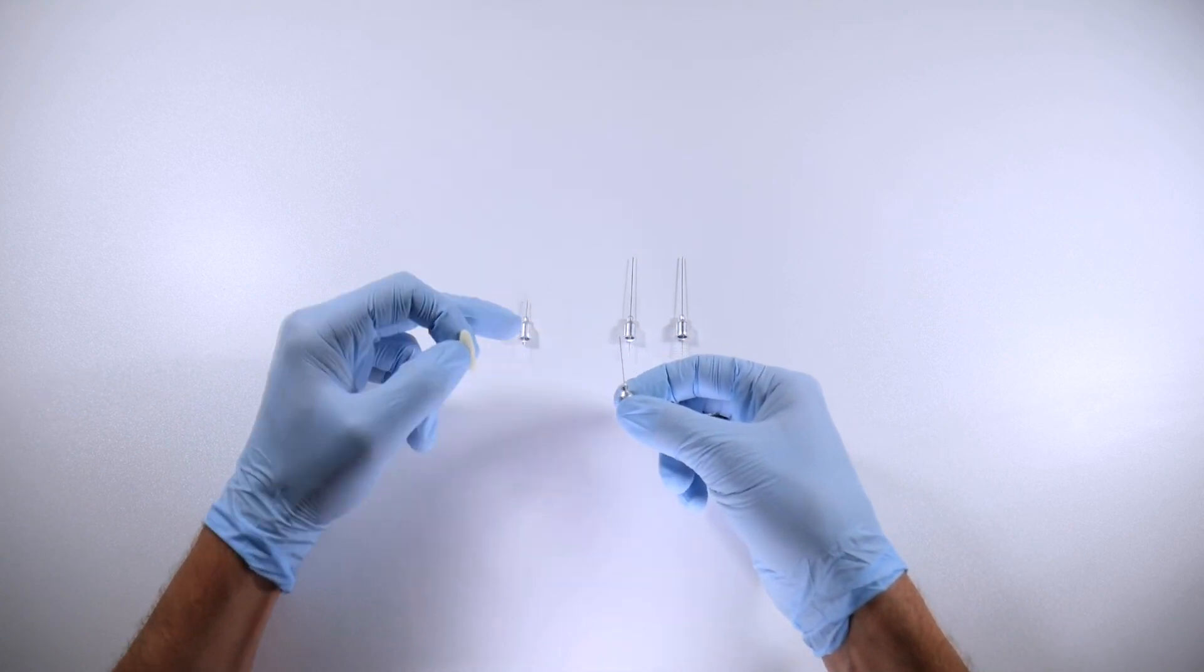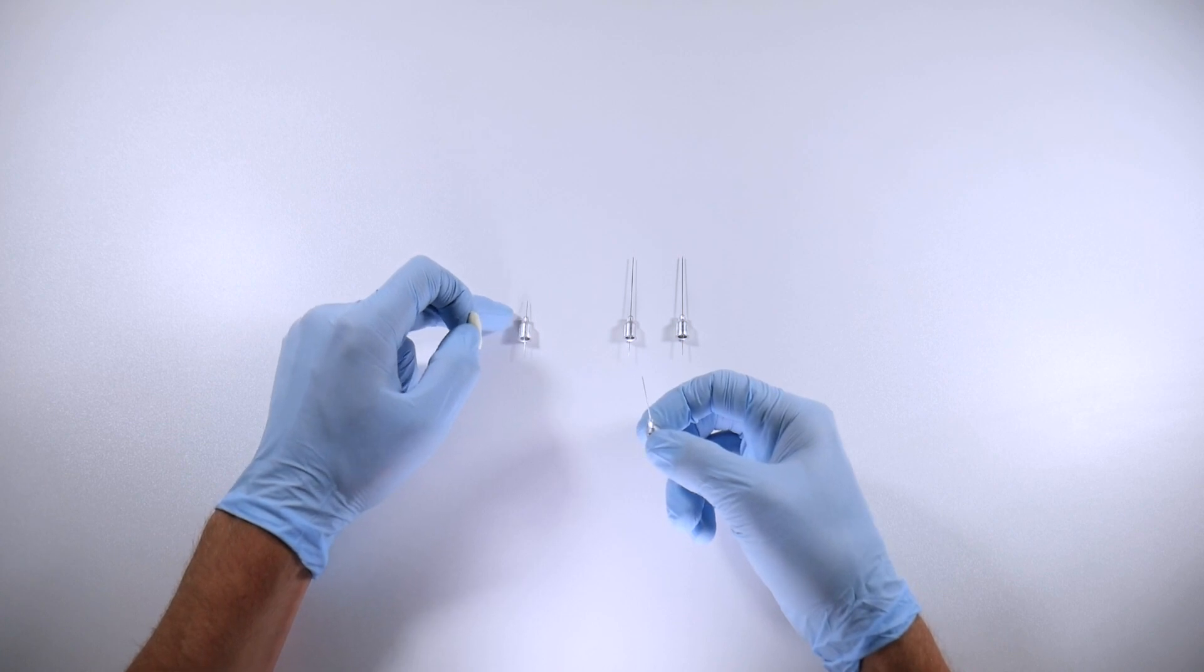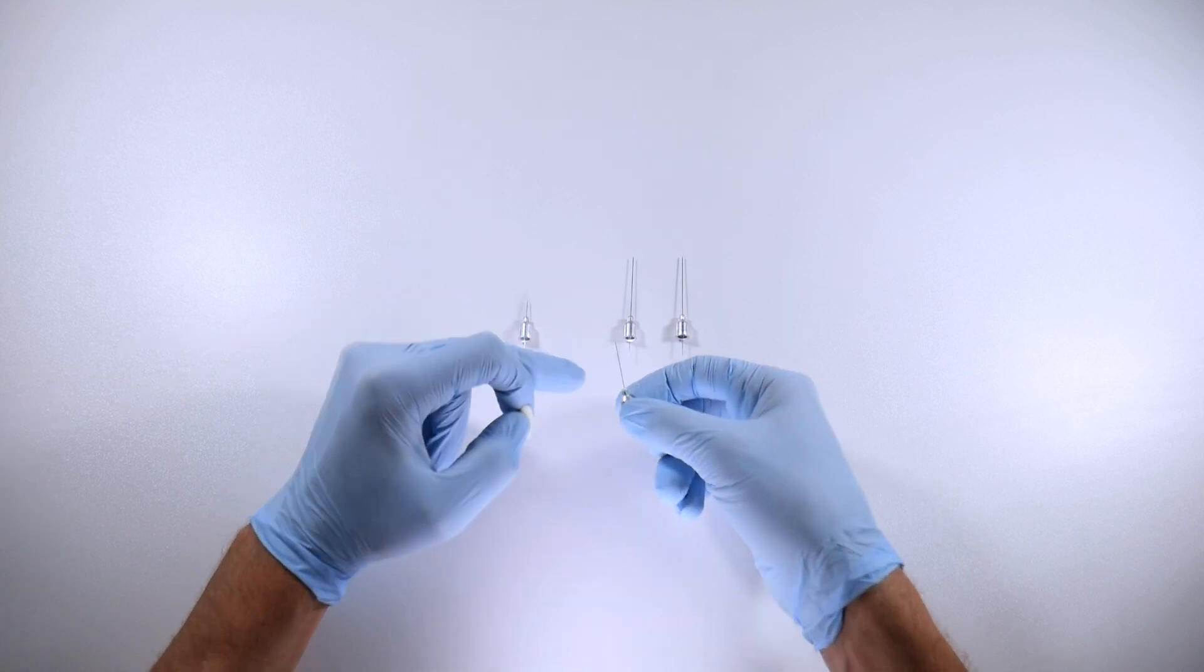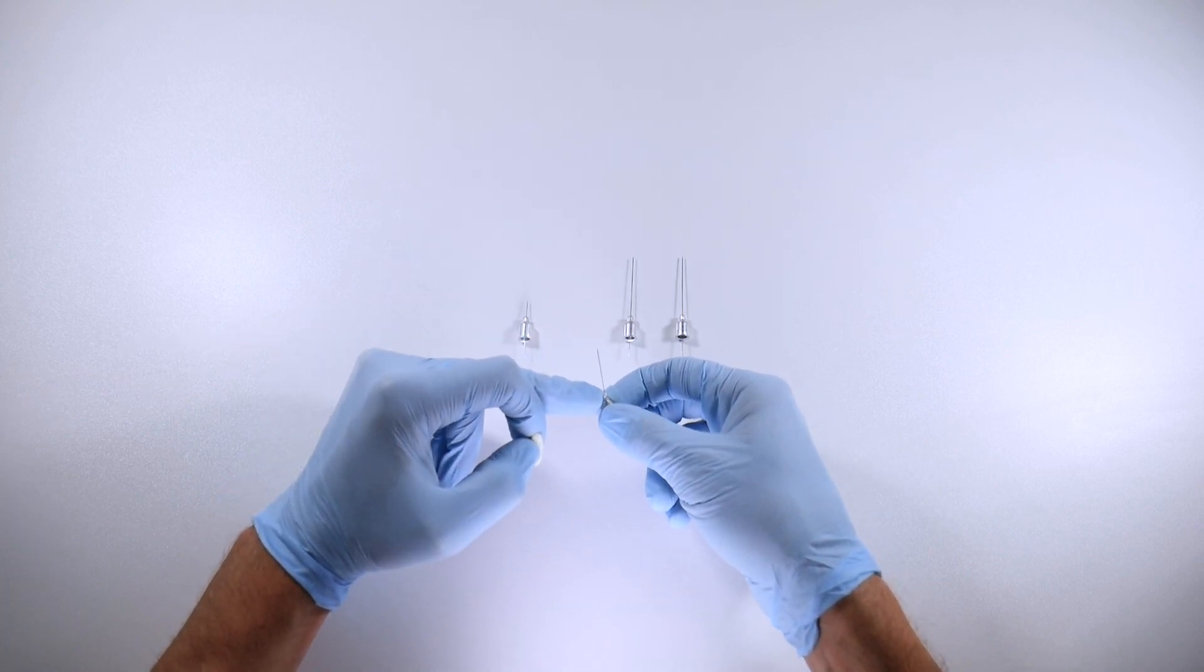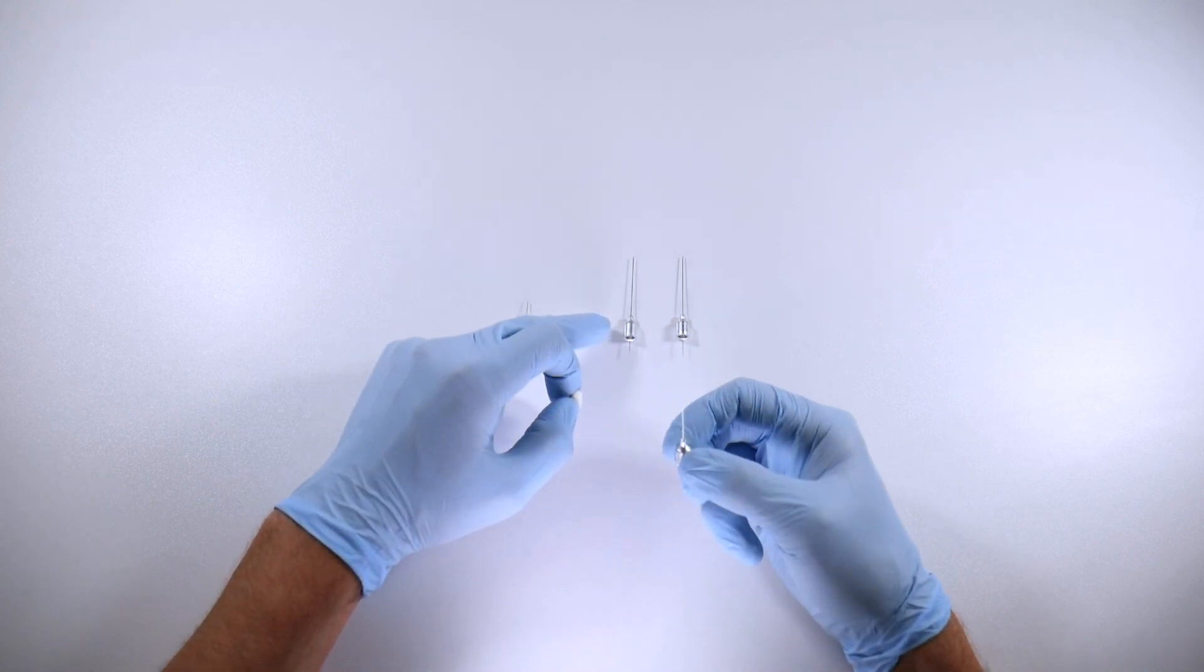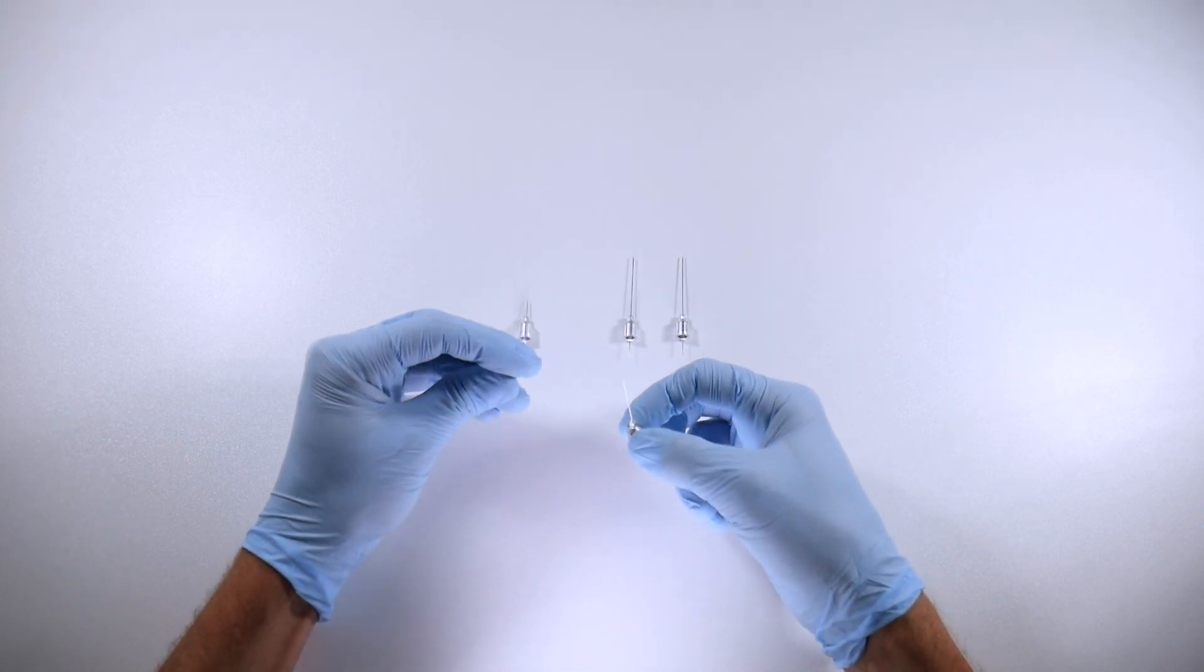One thing to think about is you've got 13 millimeter length on your extra short, you've got 20 millimeters of length from the hub to the tip of the needle on your short, and then your long needles are 32 millimeters from the hub to the tip.